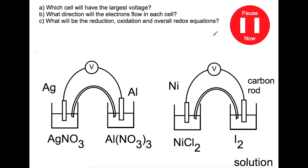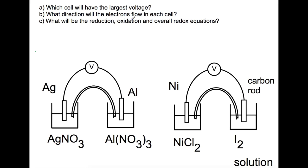Pause the video now and have a look at these two cells. Which one will have the largest voltage? What direction will the electrons travel in each cell? And what will the reduction, oxidation and redox equations be for each of these cells? Looking at which one will have the largest voltage: if you look for the order of the elements on the electrochemical series you will find aluminium, then nickel, then iodine, then silver. That means aluminium and silver have the largest difference and therefore the largest voltage will be produced by that cell.